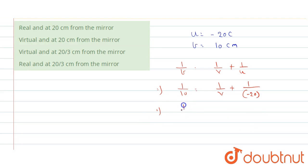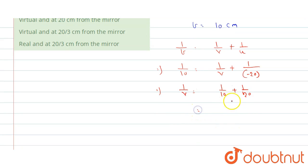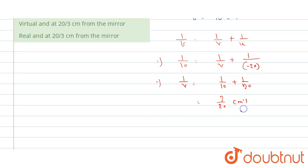That implies 1 by v is equals to 1 by 10 plus 1 by 20. That is equals to 3 divided by 20 centimeter inverse.